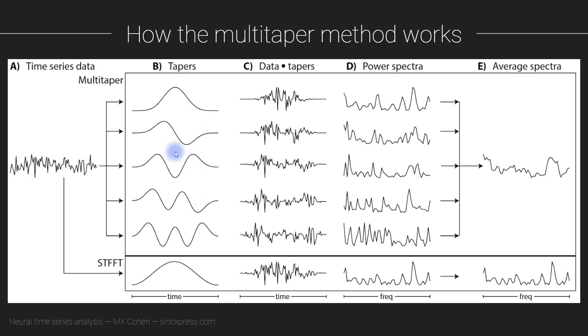So each of these five tapers gets applied to the same data, you get five different tapered data signals, you take the power spectrum of each of these tapered signals, and average these power spectra together.